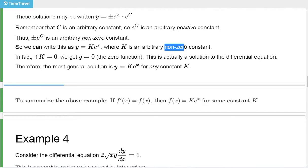What about k being zero? If k equals zero, you'd get y equals zero — that actually is a solution to the differential equation. The derivative of the zero function is the zero function again. So the general solution is: if the derivative of y equals y itself, then y has to be a constant multiple of the exponential function base e. If you have a function f such that f' equals f itself, then f has to be a constant times e^x.